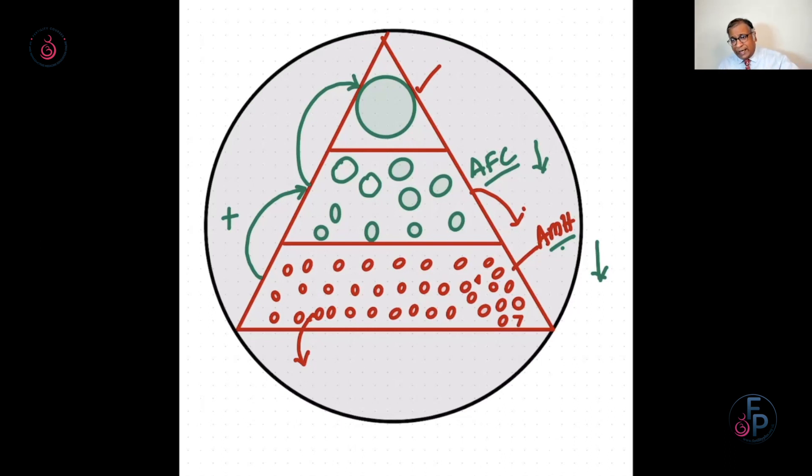If you have a lower AMH, that decline seems to happen in a much more rapid manner. But what we don't know is how many women with low AMH will continue to hold a low AMH for a long time. Some women may continue to work with the low AMH and not go into menopause for close to 10 years. But equally, there are women who will head towards menopause within 5 and 6 years.